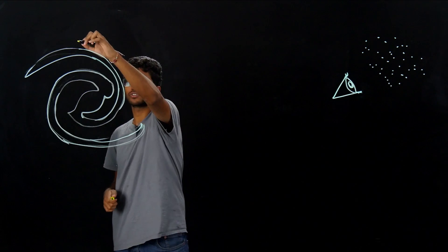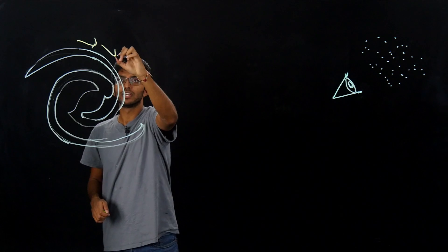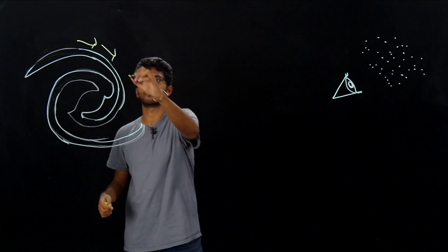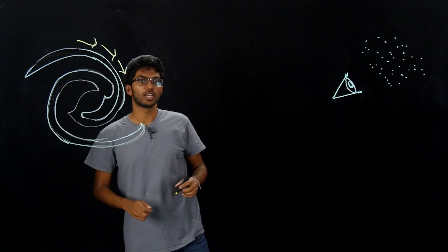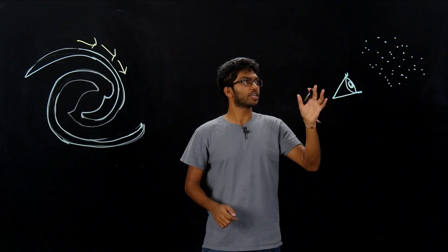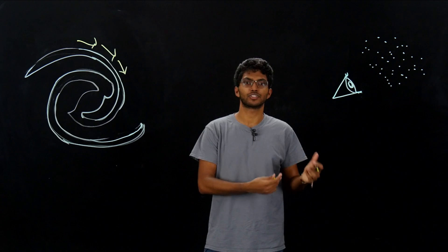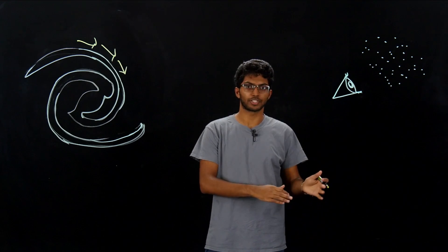The first was by observing the speed of stars going around the galaxy. The greater the mass, the greater the force on the stars, and the faster the stars would be moving. The other way was by looking at all the stars that he could see and multiplying by the estimated mass of each star, which is a reasonable calculation.